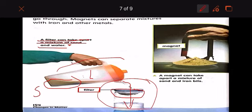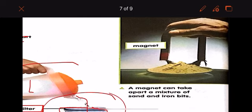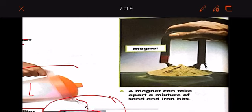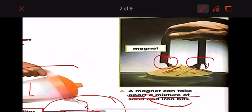So let's see magnets. Okay. Magnets can separate mixtures with iron and other metals. But it should be a metal. Alright? It should be metal. So a magnet just like this. A magnet can take apart, apart means separate, a mixture of sand and iron bits.